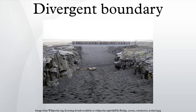Divergent boundaries can create massive fault zones in the oceanic ridge system. Spreading is generally not uniform, so where spreading rates of adjacent ridge blocks are different, massive transform faults occur. These are the fracture zones that are a major source of submarine earthquakes.